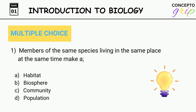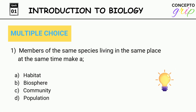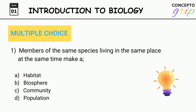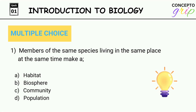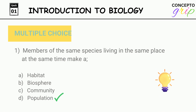Question 1. Members of the same species living in the same place at the same time make: A. Habitat, B. Biosphere, C. Community, D. Population. Correct option is D. Population.